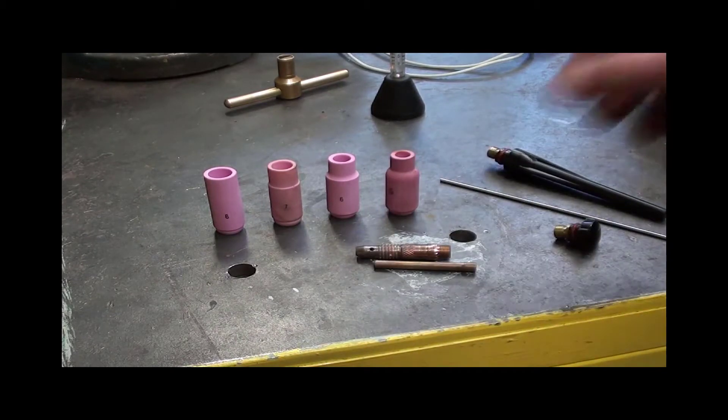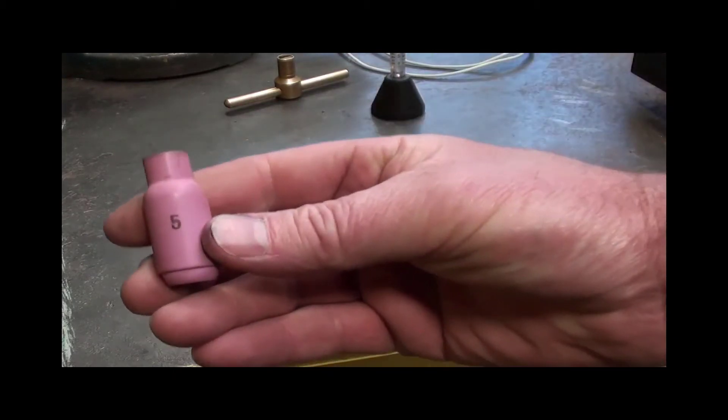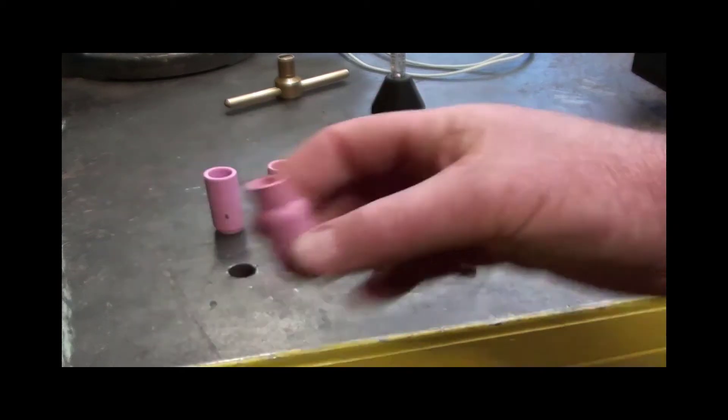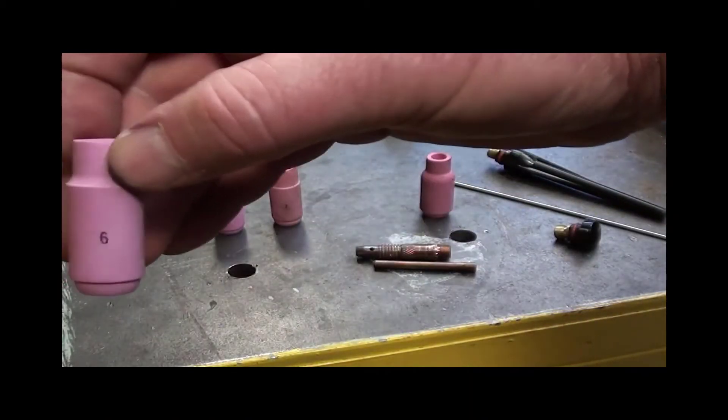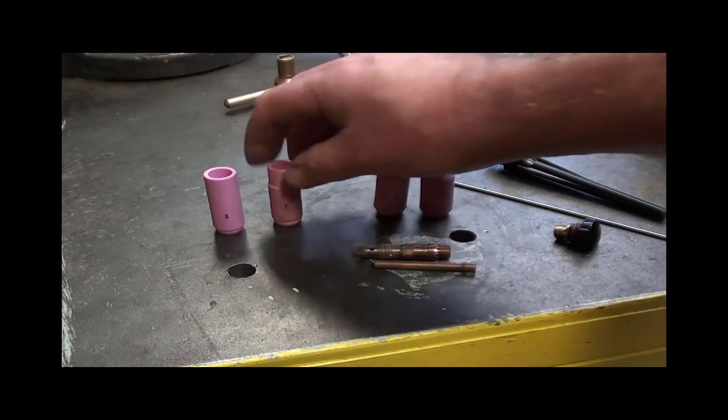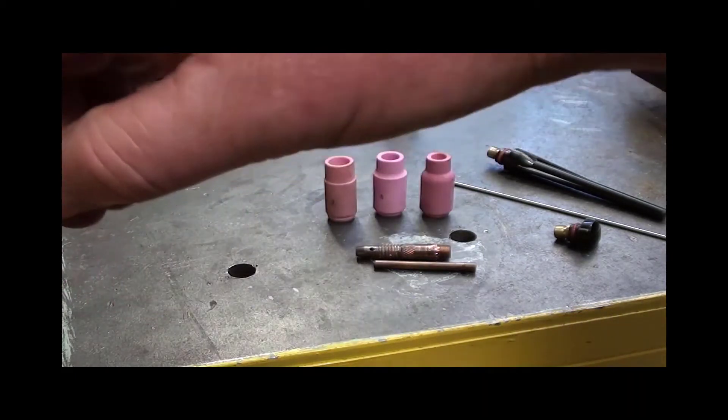So other than that, we've got some ceramics here. Got a number 5. As you can see, it's got a 5 stamped on it or marked on it. Number 6, number 7, and number 8.